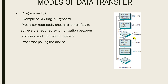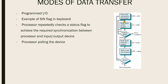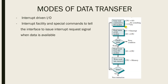Next is interrupt-driven I/O, explained with a similar flowchart. The key difference: the CPU issues a read command to the I/O module, but instead of waiting in a loop, it is free to do something else. As we discussed, the CPU can execute millions of instructions in the time it takes to enter input. So instead of making the CPU wait unnecessarily in an endless loop checking status, the CPU is freed after issuing the read command.